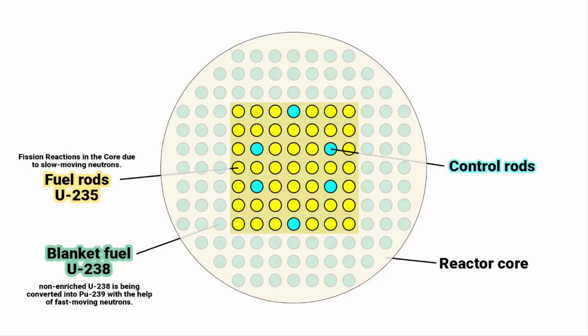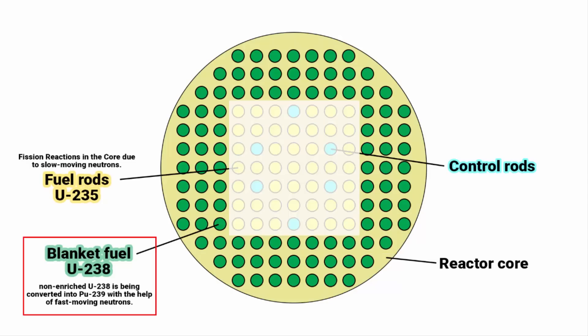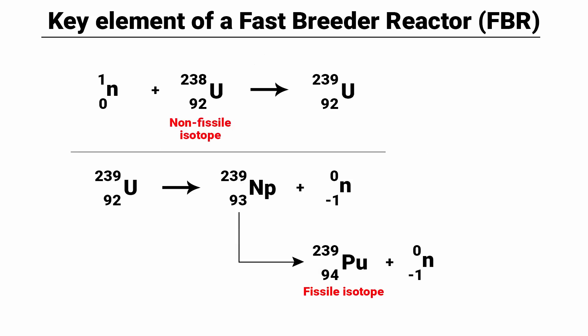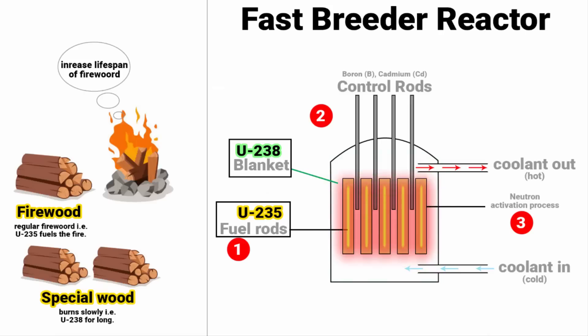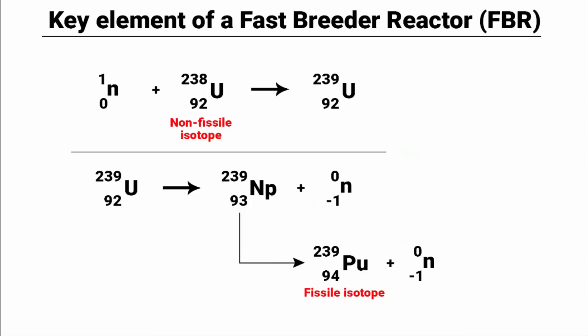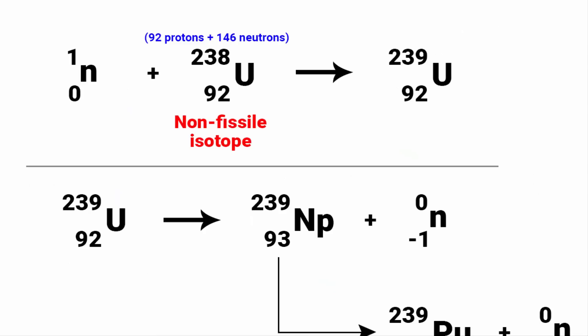I have already explained the workings of the core reactor. Let me explain what happens in this blanket region. If you look at this method by using fast moving neutrons, uranium-238 is converted into usable plutonium-239. This way the fast breeder reactor can extend the lifespan of a nuclear fuel and make better use of available resources. So the key element of a fast breeder reactor is the ability to use fast moving neutrons to collide with uranium-238 atoms. And simultaneously make uranium-238 atoms to capture some neutrons and undergo conversion to become uranium-239.